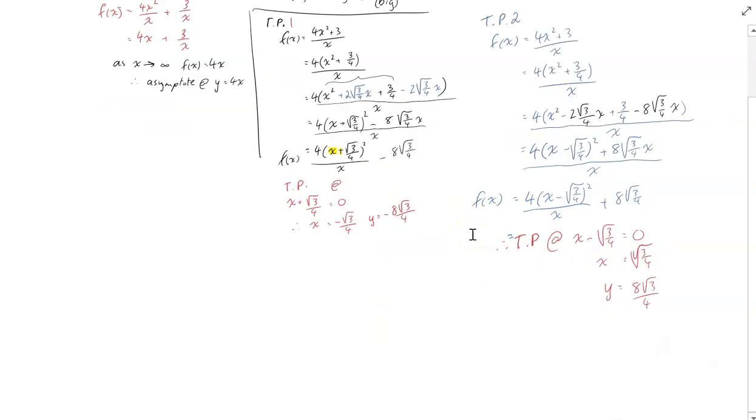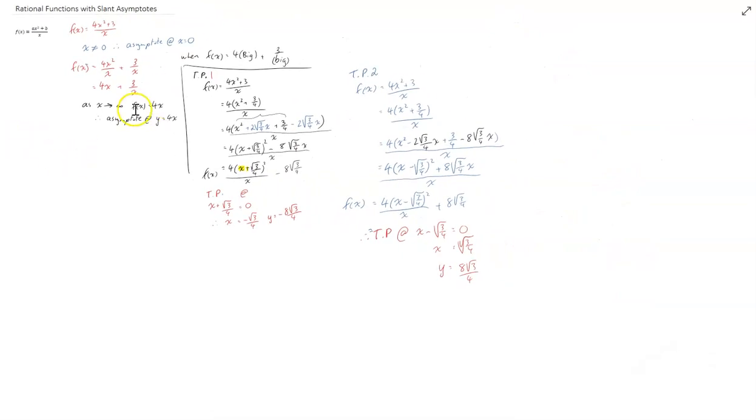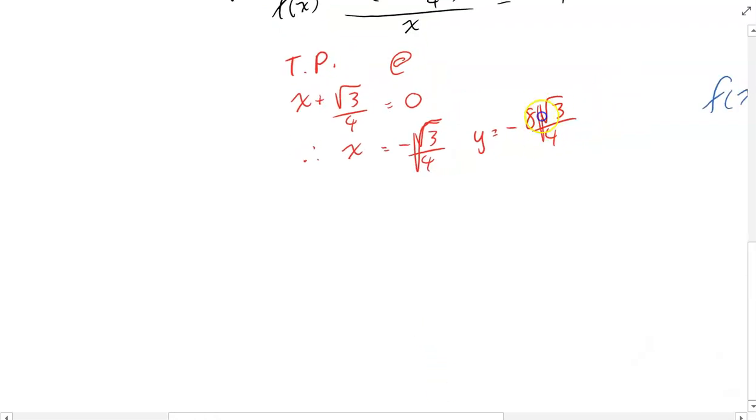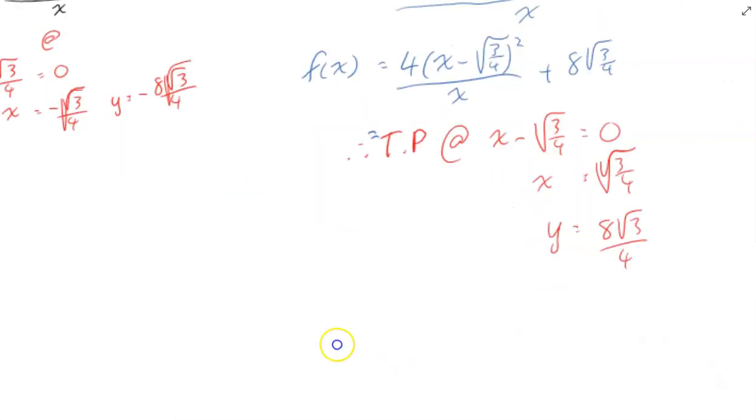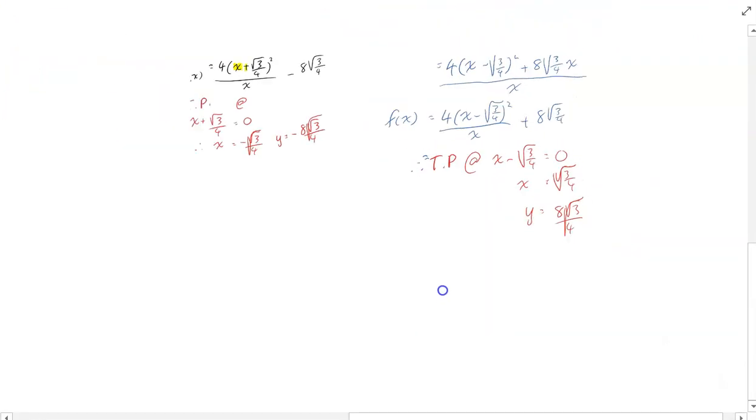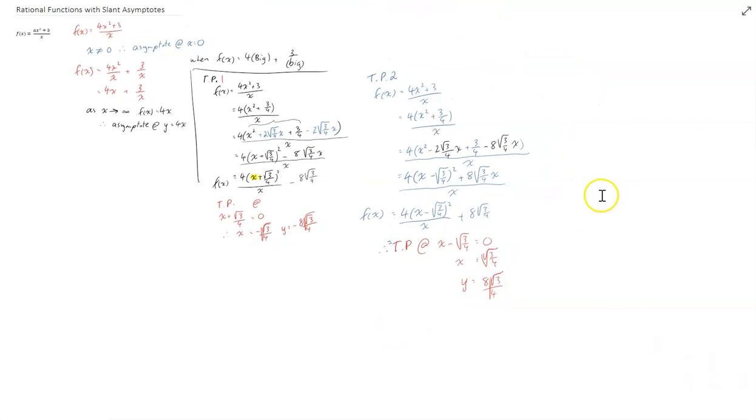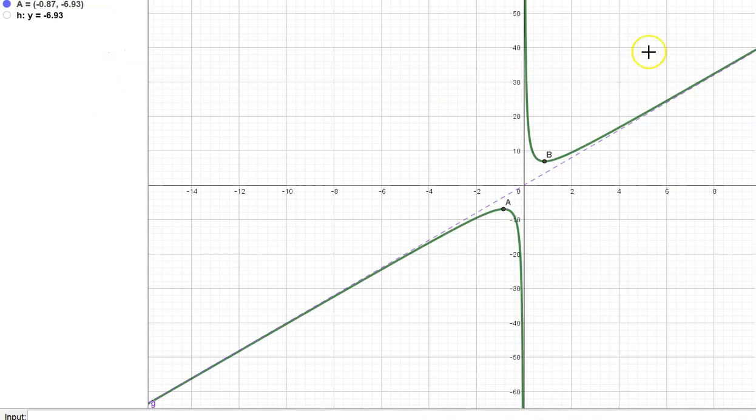That's it. We now know everything we need to know about this to sketch it. We know it's asymptote at x equals 0, a slant asymptote at y equals 4x, a turning point using this kind of weird reverse completing the square at negative root 3 on 4. And y equals negative 8 root 3 on 4. And turning points the same. Those are our rational functions with slant asymptotes. Sketch it, and it should look like that.